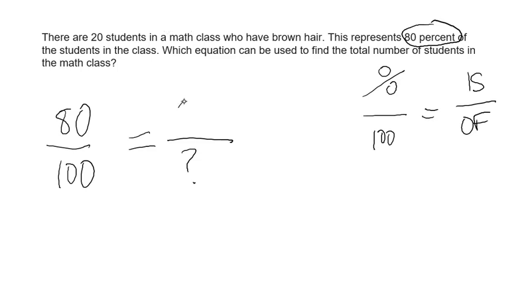So there are 20 students with brown hair of the total number of students in the class, and we're trying to find the total. So our of amount is the total. Our is is how many out of the total represents the percent that we have.